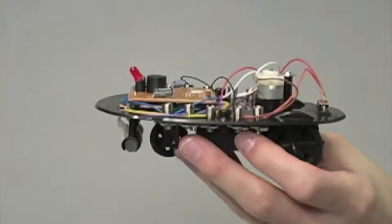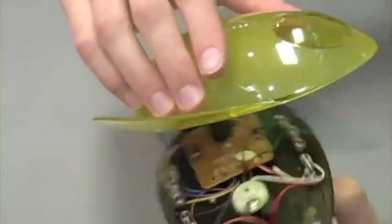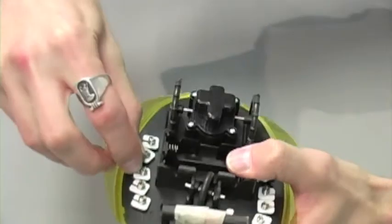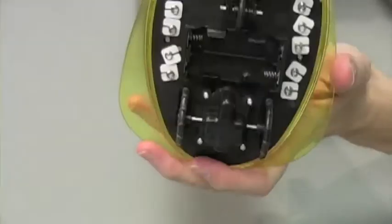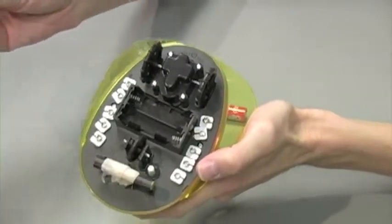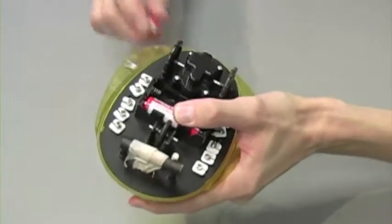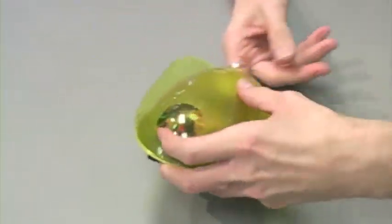And now for the last step, we're going to attach the dome of the robot. Use two of the larger screws. Now all we need to do is install our batteries. The Treasure Finder Robot by Tree of Knowledge requires two AA batteries. And now your robot's complete.